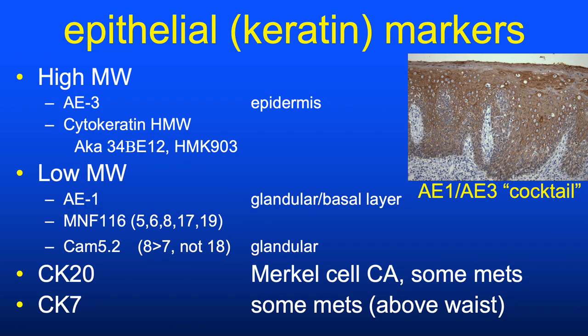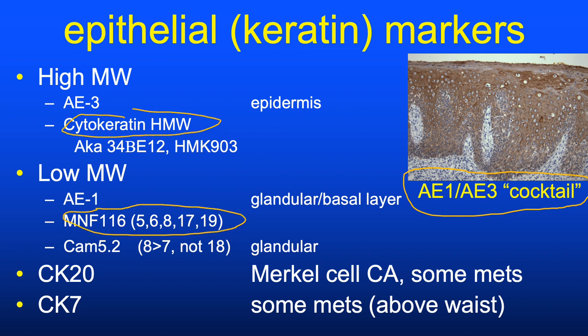Immunostains for epithelium are largely keratin markers, often combined into cocktails to maximize sensitivity without compromising specificity. The AE1/AE3 cocktail, combining high and low molecular weight cytokeratins, is the most commonly used. Cytokeratin HMW and MNF116 are also good screening stains for carcinoma. Other type-specific cytokeratins have more specific applications.